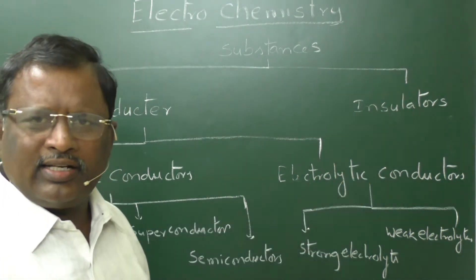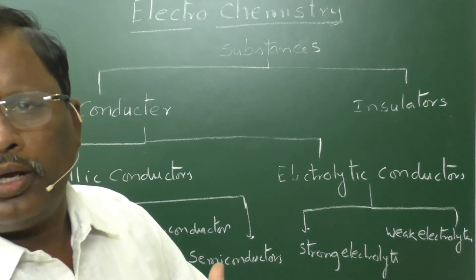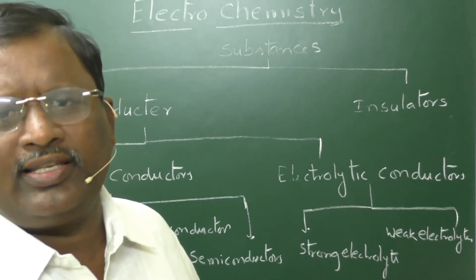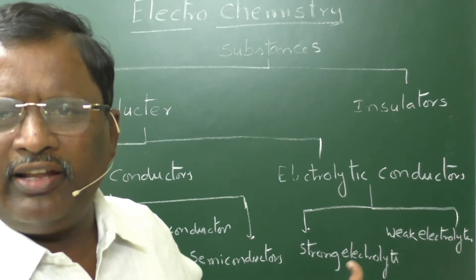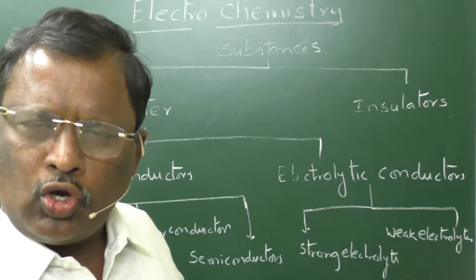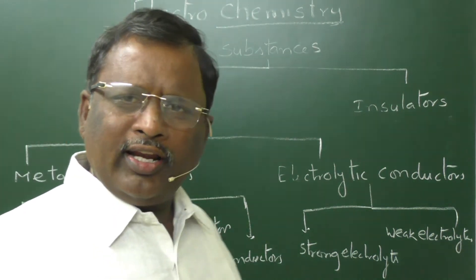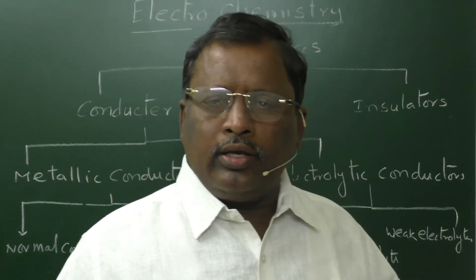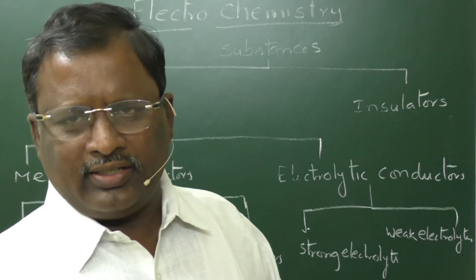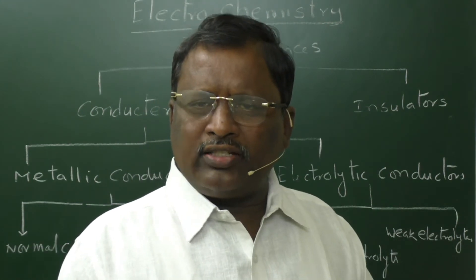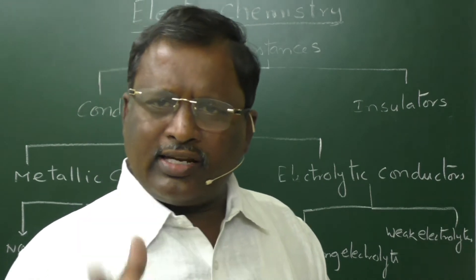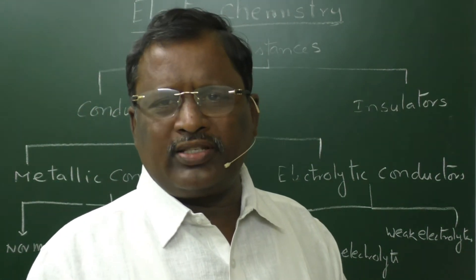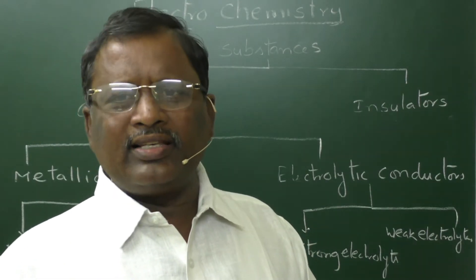Electrolytic conductors are again divided into two types. If more free ions are available, it will conduct more electricity; if fewer ions are available, it will conduct less electricity. Basing on this, electrolytic conductors are divided into strong electrolytes and weak electrolytes. Strong electrolytes — substances which conduct a large quantity of electricity, including strong acids, strong bases, and concentrated ionic substances. Weak electrolytes include weak acids and weak bases, because they ionize to a lesser extent, so fewer ions are available and conductance is less — since conductance is directly proportional to the number of ions present.